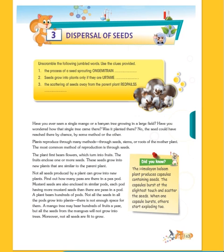A plant first produces flowers, which are then converted into fruits. The fruits enclose one or more seeds. These seeds grow into new plants that are similar to the parent plant.